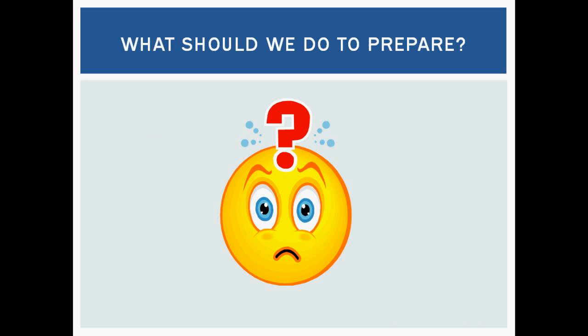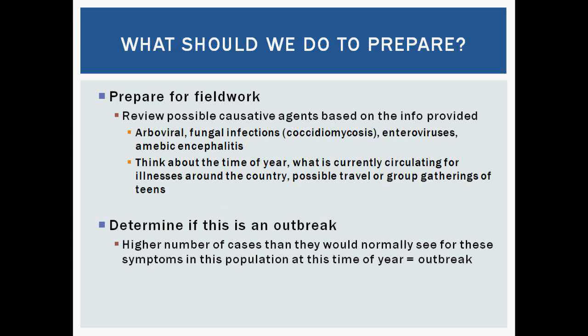The first thing we're going to want to do is prepare for field work. This call comes in to the health department — this is all that you know. What can be causing these illnesses? What are some of the causative agents for this time of year that these teenagers could be getting? You want to think about arbovirals because it's summertime, fungal infections especially in that part of the country — coccidioidomycosis is a big one — different enteroviruses which circulate in the summer and fall, or a certain type of encephalitis. Think about the time of year, what's going on in that part of the country, whether it's spreading, and then look at travel or group gatherings — have these teens recently traveled or gathered at a conference or sporting event? You want to brainstorm these ideas for going out to do field work.